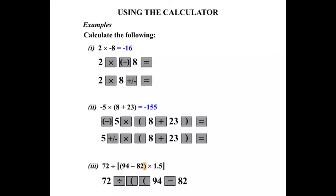Then we have a closing bracket, so we type that in. We then multiply by 1.5, and don't forget to finish with the closing bracket again. Now, if you press equals, hopefully you've done that well.